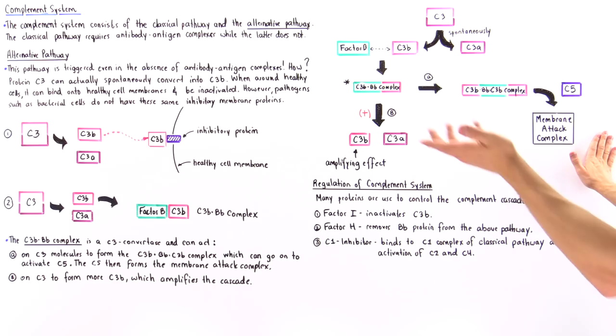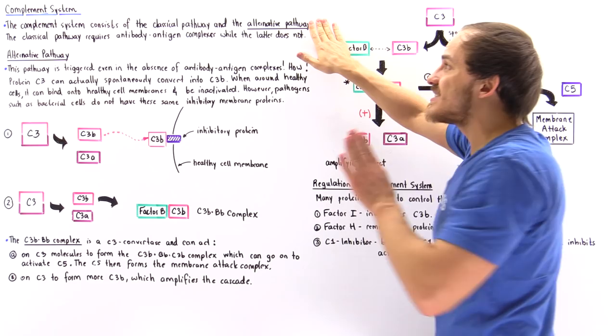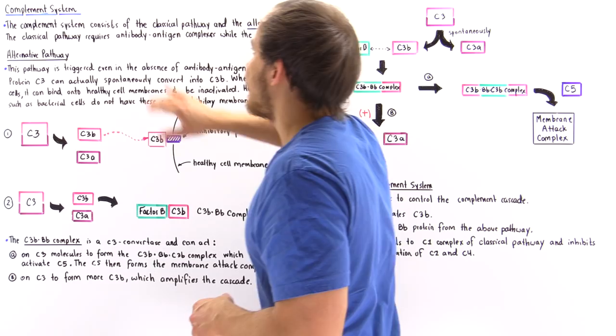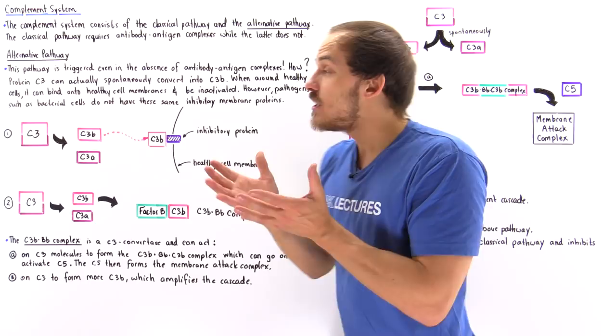So this is essentially the alternative pathway of the complement system. This one does not require the presence of antibody-antigen complexes, whereas the classical pathway actually needs antibody-antigen complexes to take place.